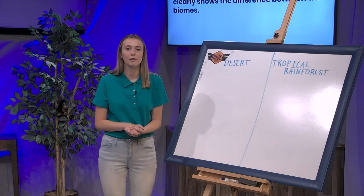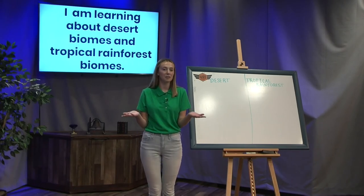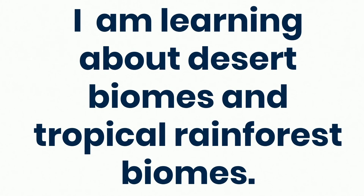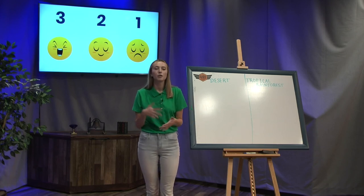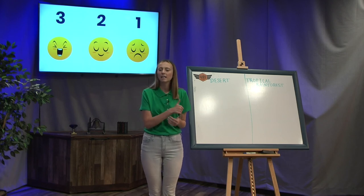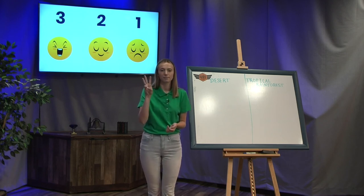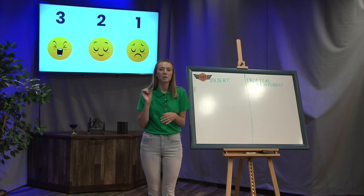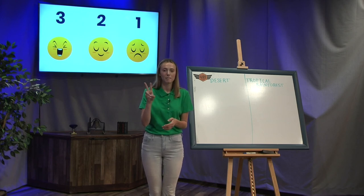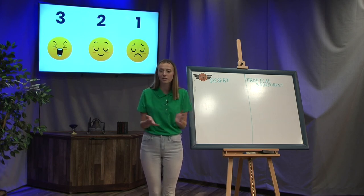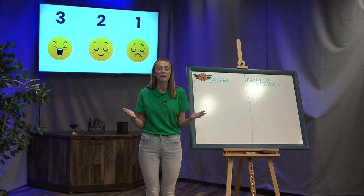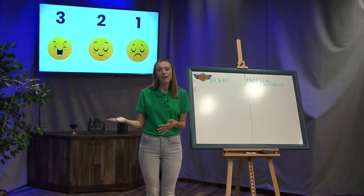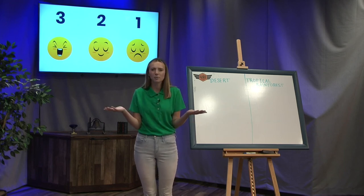Let's review our learning target for today — say it with me: I am learning about desert biomes and tropical rainforest biomes. Now let's self-evaluate. If you really learned about these biomes and you're ready to do your lab work, give yourself a three. If you feel okay but are a little confused, give yourself a two. And if you're very confused and need more work, give yourself a one. All of these numbers are okay — it's great to self-evaluate and see how you can do better next time.